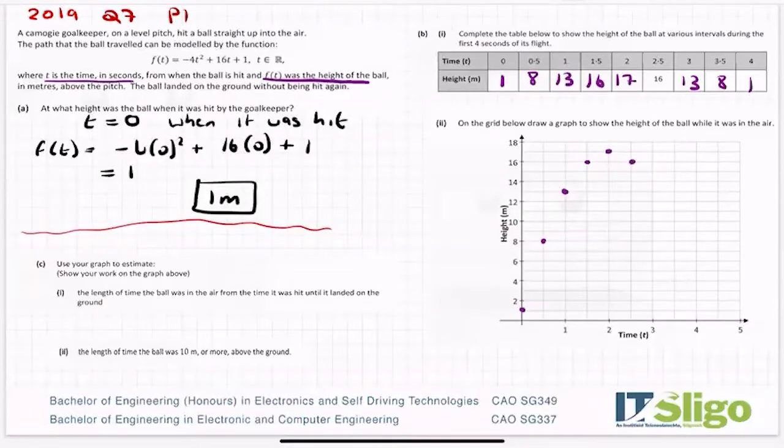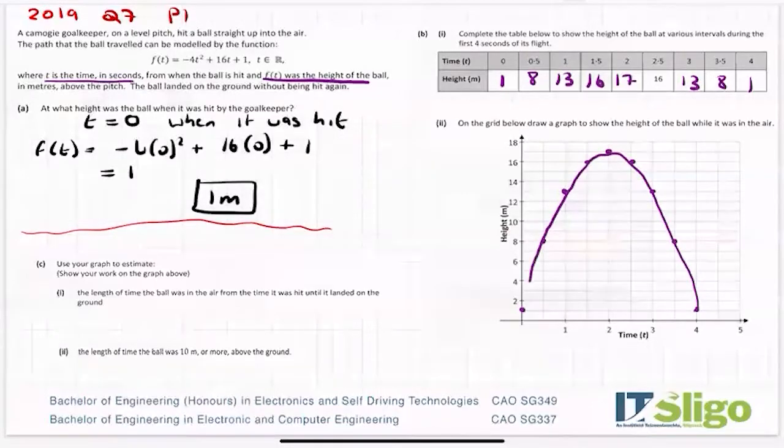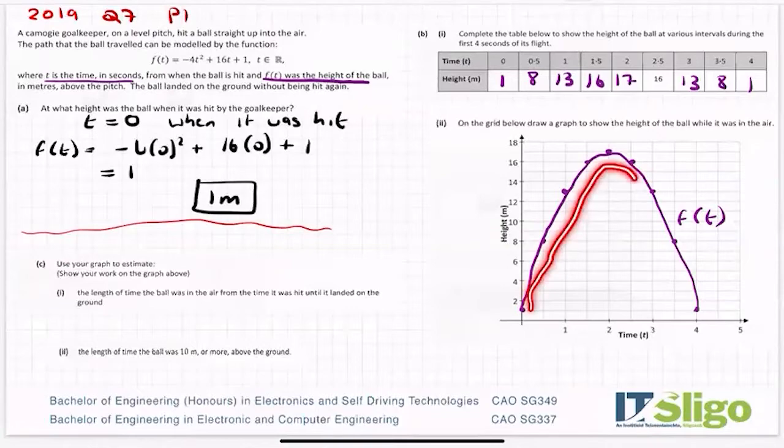And then we're coming back down again for two and a half. Three is 13 again. And three and a half is down to eight. And four is back down to one. Okay, and as smooth as you can, you join these together in a nice curve. It's not a regimental structured line, it's a curve. Okay, and let's label it. That's f(t). Okay, every curve needs a label. So that is the trajectory of the ball. It goes up, it turns and it comes down. And for anyone who has calculus done, that point there where it turns is what's called the turning point.